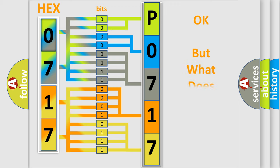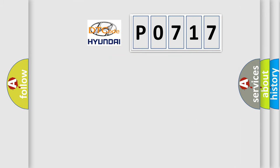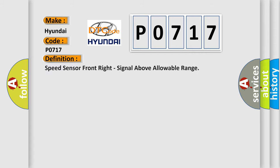We now know in what way the diagnostic tool translates the received information into a more comprehensible format. The number itself does not make sense to us if we cannot assign information about what it actually expresses. So, what does the diagnostic trouble code P0717 interpret specifically for Hyundai car manufacturers? The basic definition is: speed sensor front right, signal above allowable range.